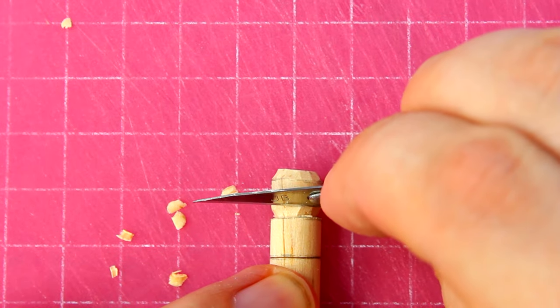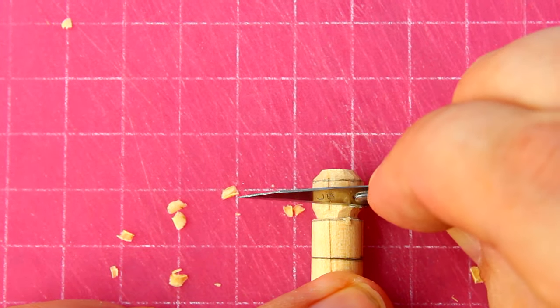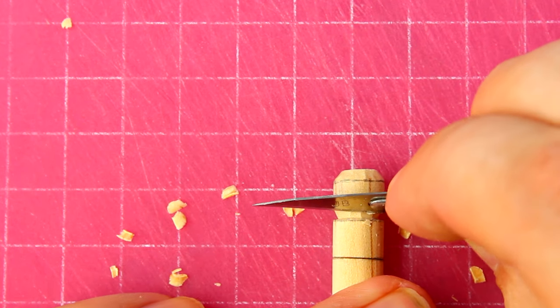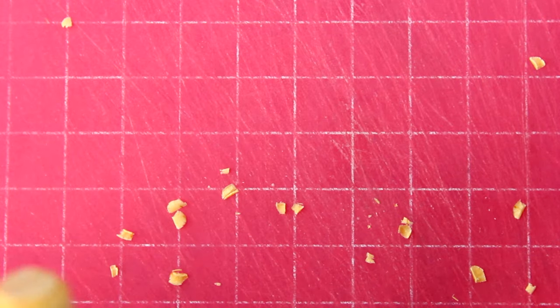Which means that when you slip, and you will slip eventually, you won't jerk as much and will be less likely to hit something important like your finger or a part of the dowel that you don't want to cut.